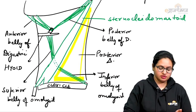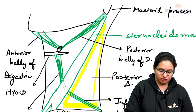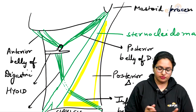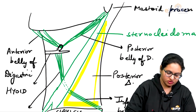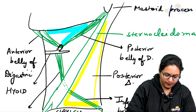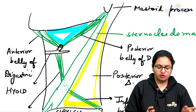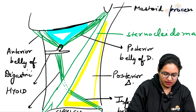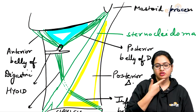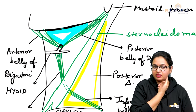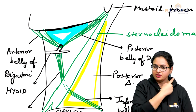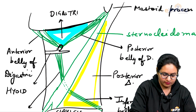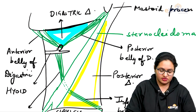Coming to the anterior triangle, we can see the anterior belly and the posterior belly of digastric as well as the superior belly of the omohyoid have divided the anterior triangle into further subdivisions. We can see one triangle bounded on either side by the anterior and posterior belly of digastric, with the base formed by the lower border of the mandible up to the angle of the mandible, with an imaginary line extended backwards. This triangle is the digastric triangle.